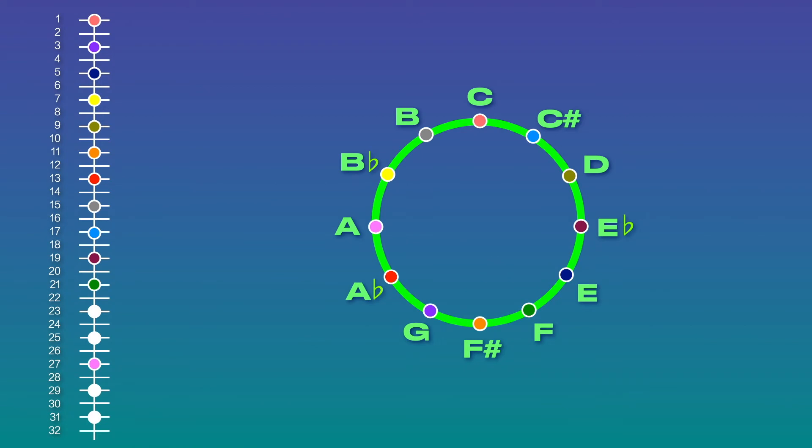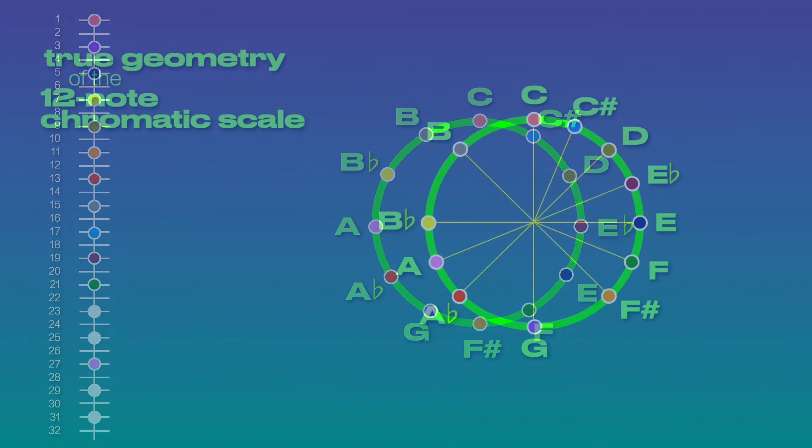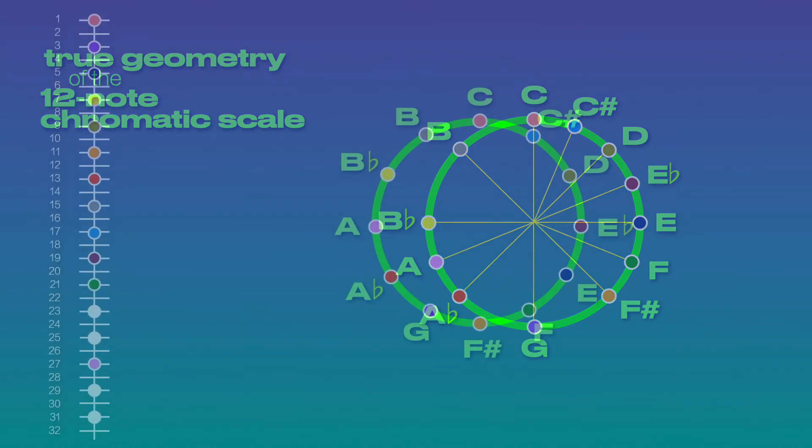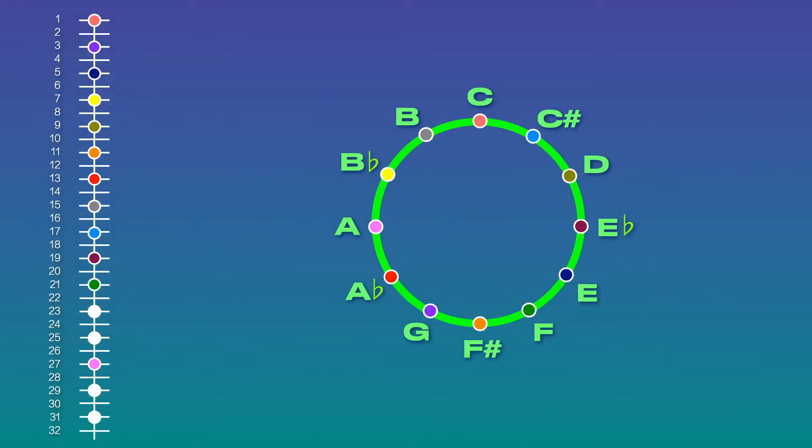Because our traditional 12-note chromatic scale ignores these four notes, the geometrical pattern our chromatic scale generates looks more like this. But we can adjust the circle of the chromatic scale to include these ignored notes.